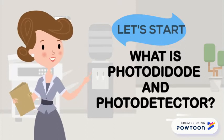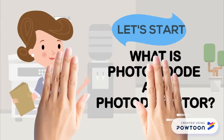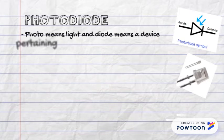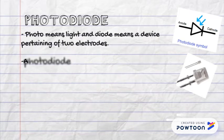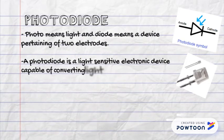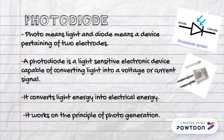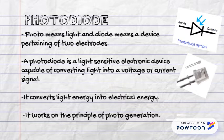What is a photodiode and photodetector? Photodiode: 'photo' means light and 'diode' means a device pertaining to two electrodes. A photodiode is a light-sensitive electronic device capable of converting light into a voltage or current signal. It converts light energy into electrical energy. It works on the principle of photogeneration.